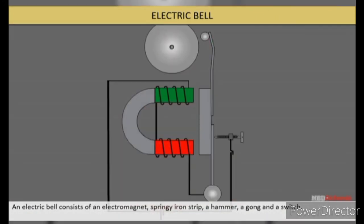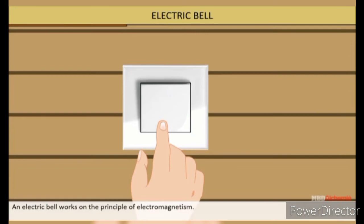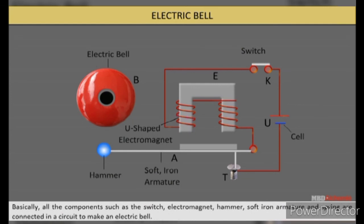An electric bell consists of an electromagnet, springy iron strip, a hammer, a gong, and a switch. An electric bell works on the principle of electromagnetism. It is a simple device, which has a U-shaped solenoid, one end of which is connected to a spring of the switch, and the other end is connected to a soft iron armature.